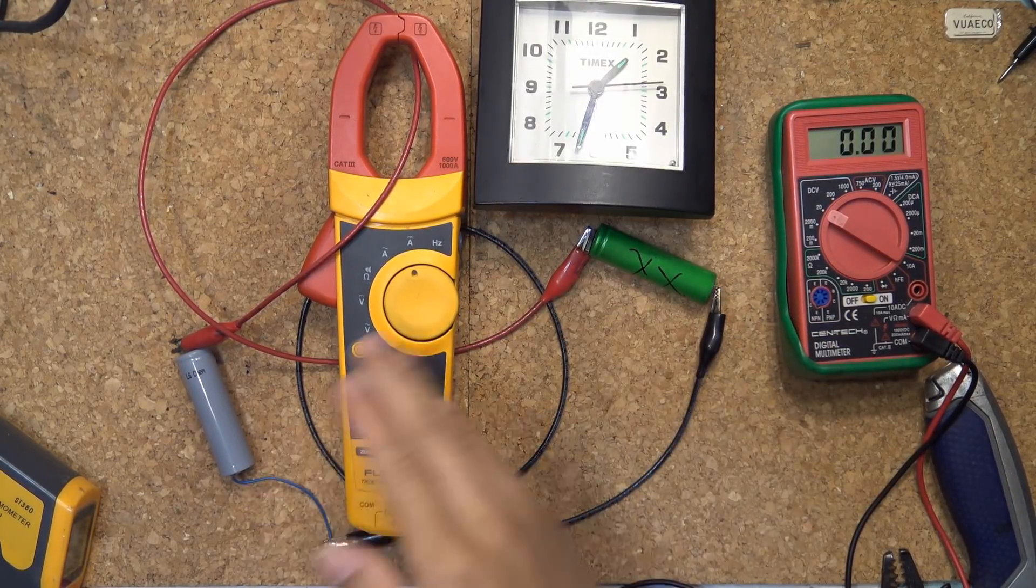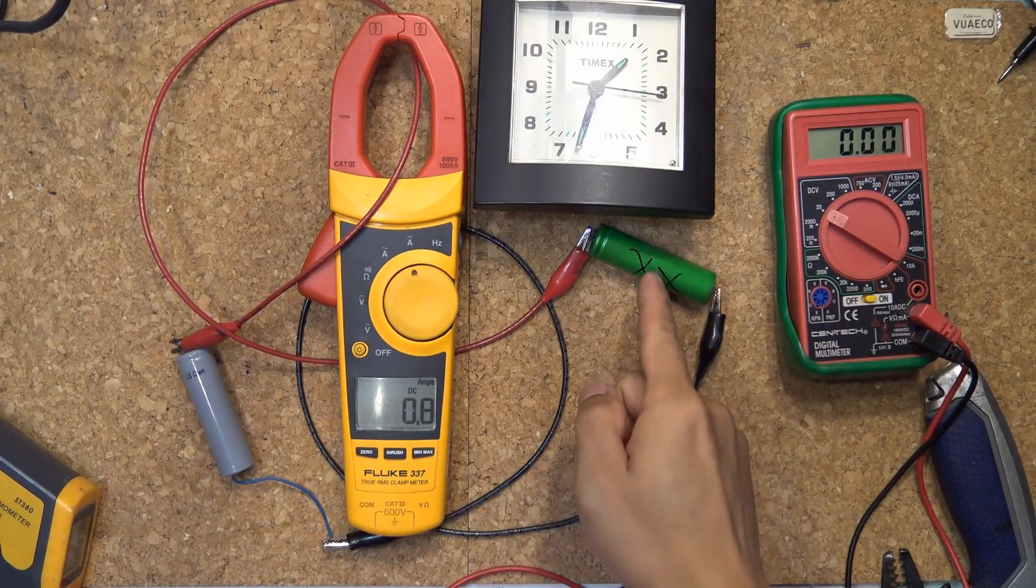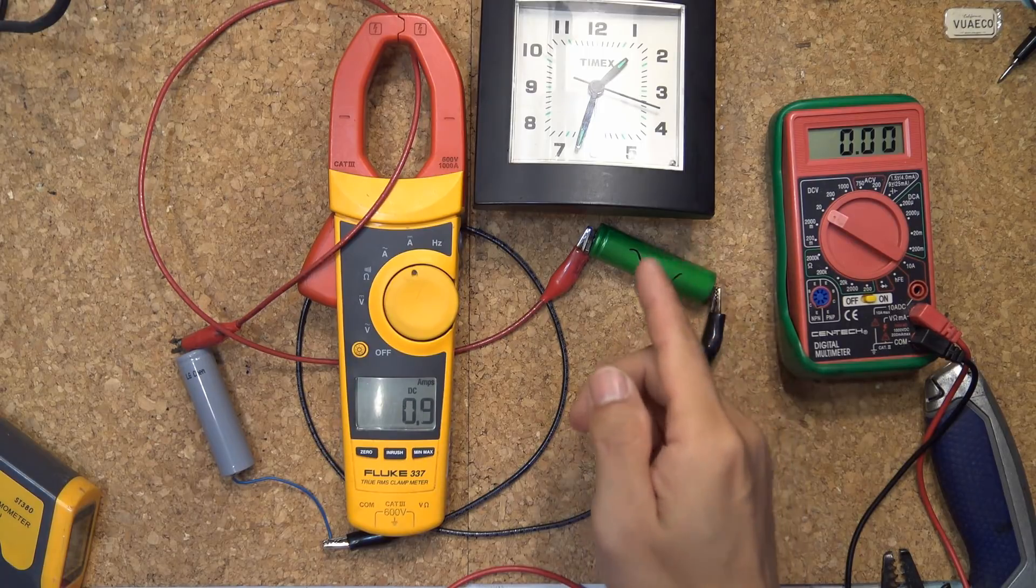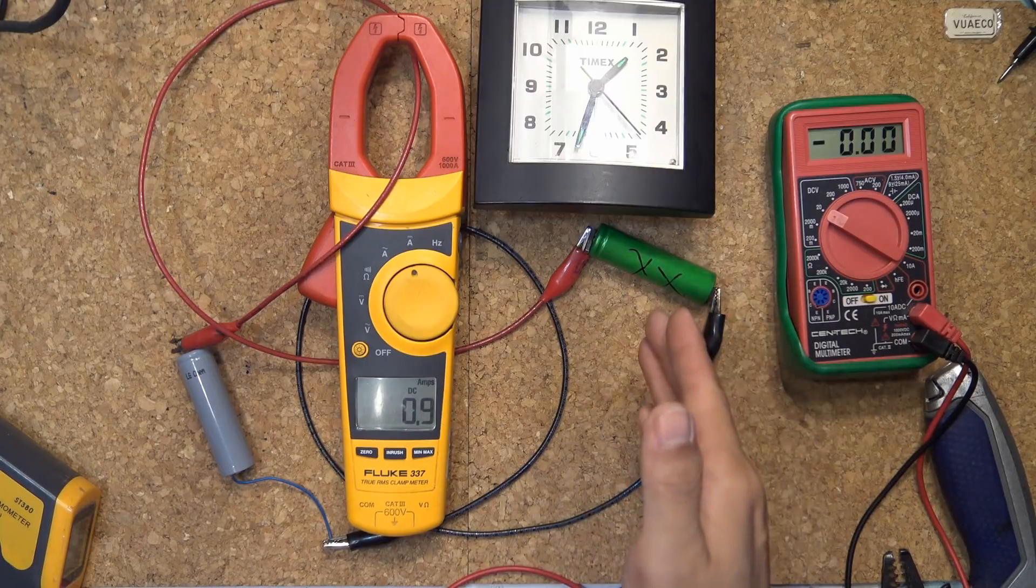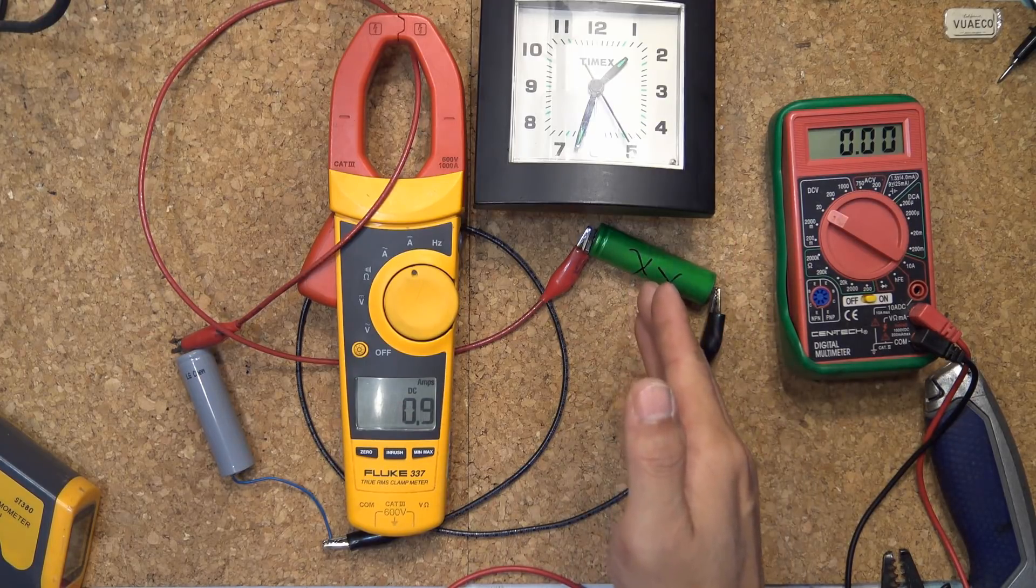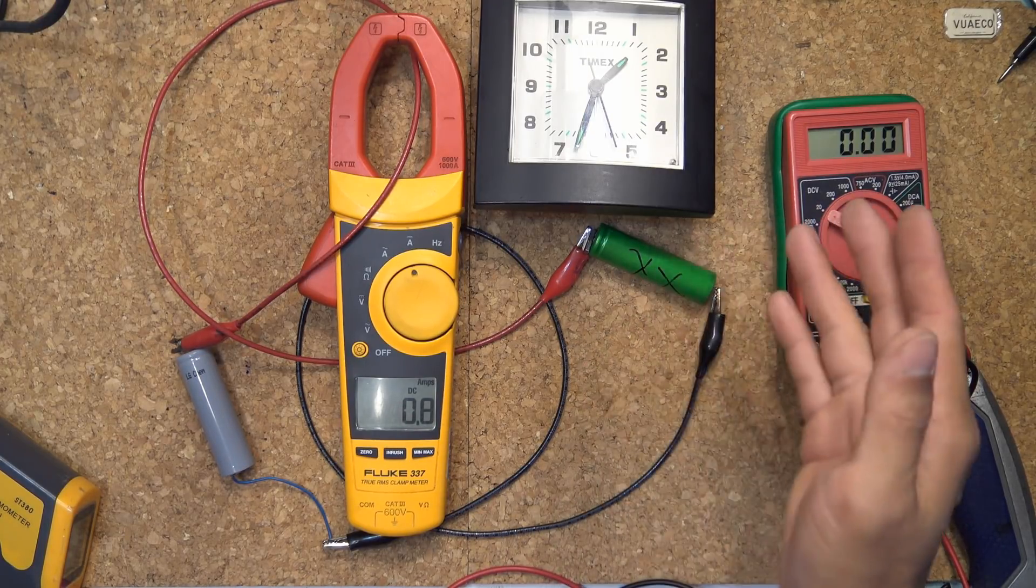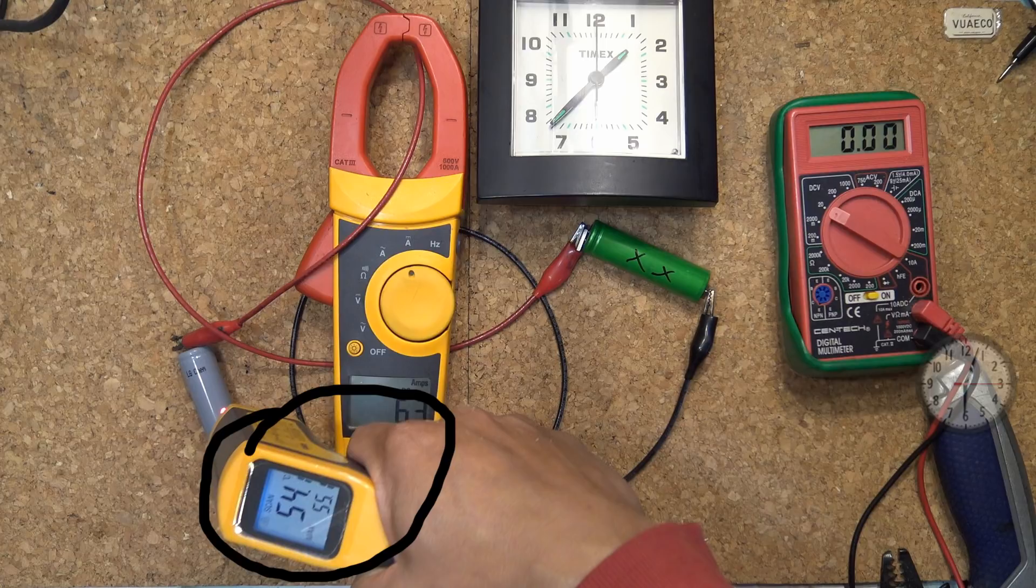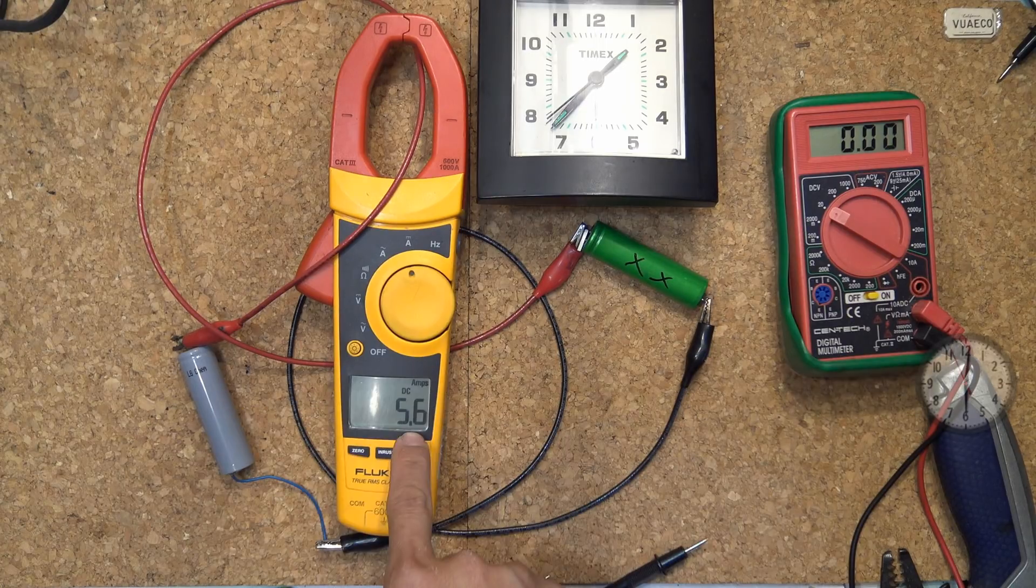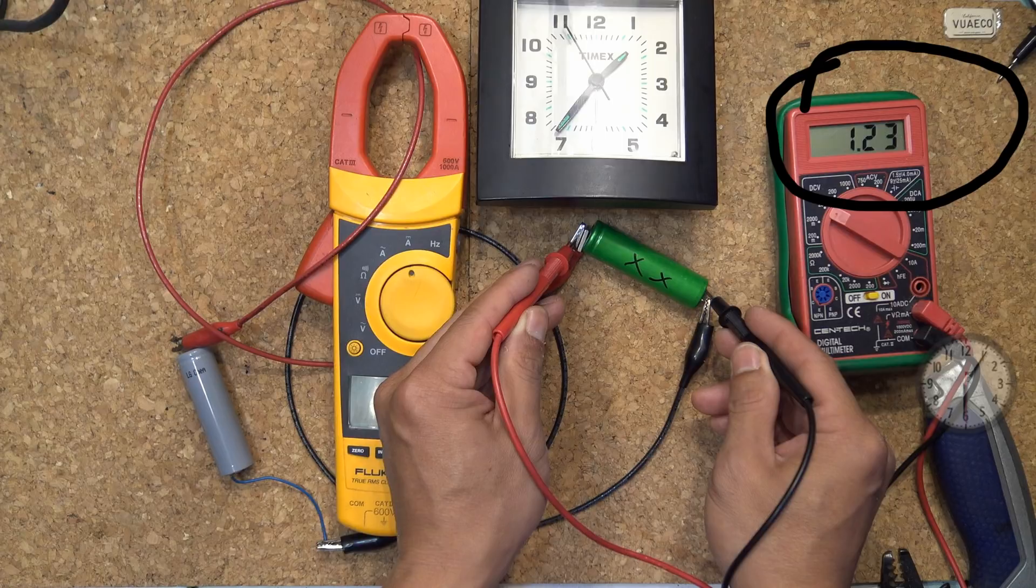So how do you know when you have a bad cell that cannot be revived? Number one, it either stays cold as cash, or number two, it's the other extreme. Both cells will get really hot. It's not just the dead cell you're trying to revive, but also the good cell that you're using to charge it will get really hot. The amp stays really high, and the voltage does not increase.